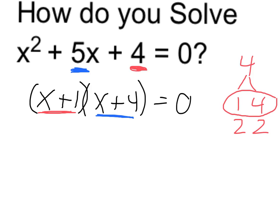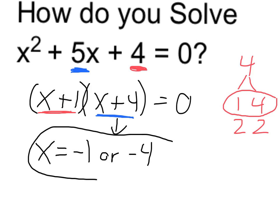This first binomial would be 0 if x is equal to negative 1, because negative 1 plus 1 is 0. The second one would be equal to 0 if x is equal to negative 4. So those are my two possibilities, x is negative 1 or negative 4.